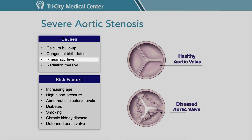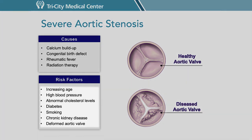Rheumatic valve disease can also affect more than just one valve. Radiation therapy to the chest for cancer can lead to inflammation and scarring of the heart valves, though this is less common nowadays as mantle radiation is used less frequently. Risk factors for progressive degeneration of the heart valve include increasing age, high blood pressure, abnormal cholesterol levels, diabetes, tobacco use, chronic kidney disease, and having a deformed aortic valve.